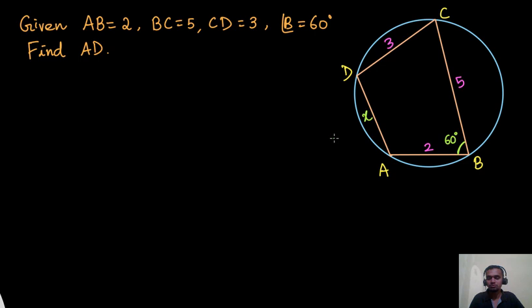We have to find the fourth side AD, and one angle is also given — that is angle B. So how can we solve for this unknown length AD?